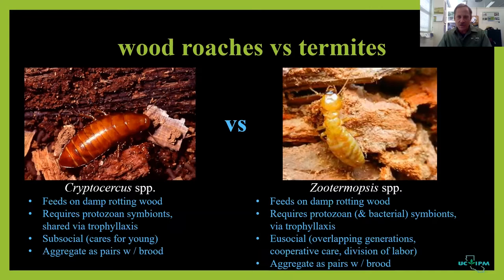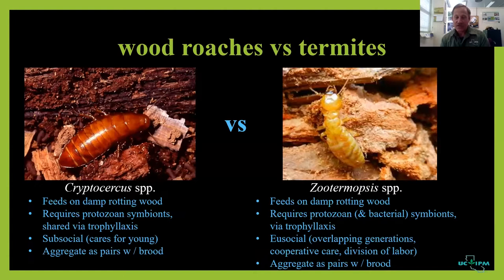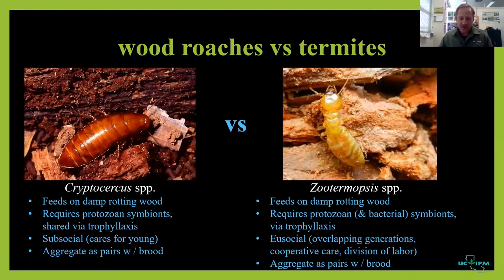In fact, there are some cockroaches that feed in similar ways as termites. In the eastern United States, there's a cockroach called the woodroach Cryptocercus that shares ecological similarities with primitive termites like dampwood Zootermopsis species. They both feed on rotting wood, both require gut symbionts — microbes in their gut that help digest cellulose — and they share these symbionts amongst each other via trophallaxis, consuming exudates containing the microbes they need.